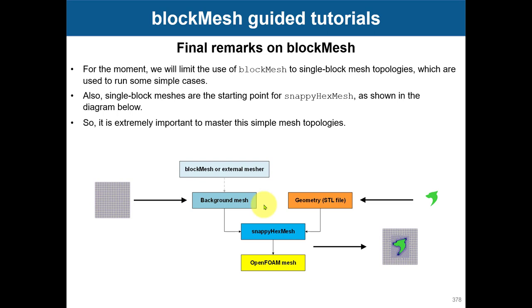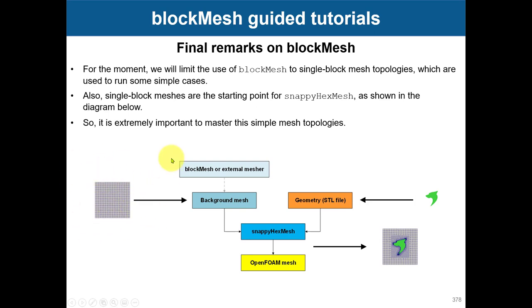The importance of BlockMesh and why we focus on single block meshes is because in the next section we're going to talk about SnappyHexMesh. SnappyHexMesh is the true meshing tool you will use for difficult meshes. It will snap to the geometry, but it also requires a background mesh. This background mesh needs to be made of hexahedra, and you can generate it very easily using BlockMesh with your parametrical file.